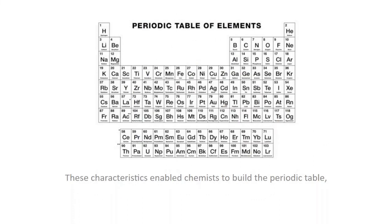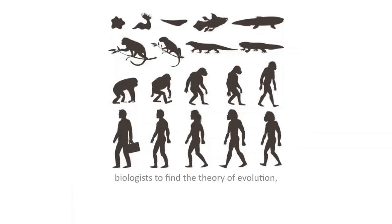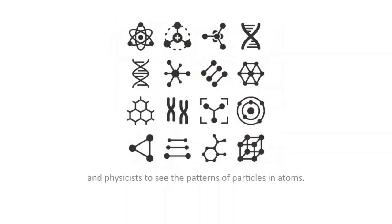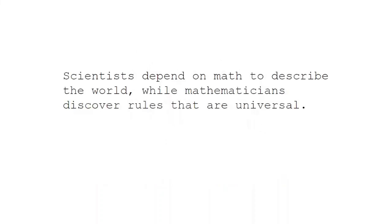These characteristics enabled chemists to build the periodic table, biologists to find the theory of evolution, and physicists to see the patterns of particles in atoms. Scientists depend on math to describe the world, while mathematicians discovered rules that are universal.